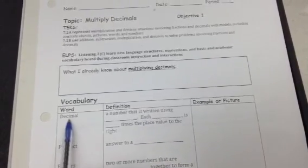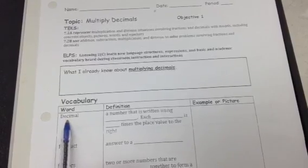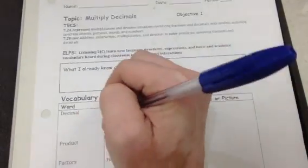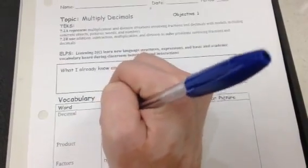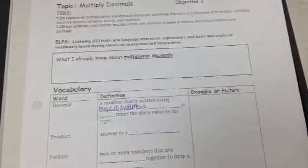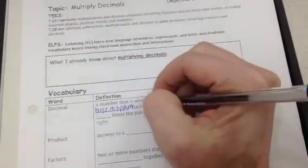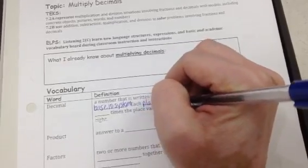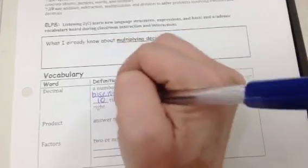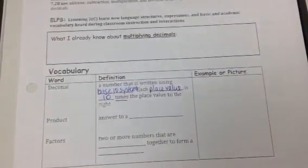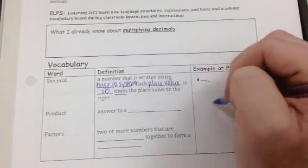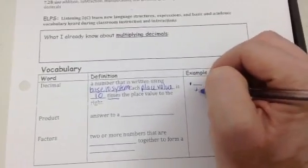First to start off with multiplying decimals is our vocabulary, and our first word is decimal. A decimal is a number written using a base 10 system. Each place value is 10 times the place value to the right. So for example, if you have a decimal point and then a number behind the decimal, that's called the tenths place.